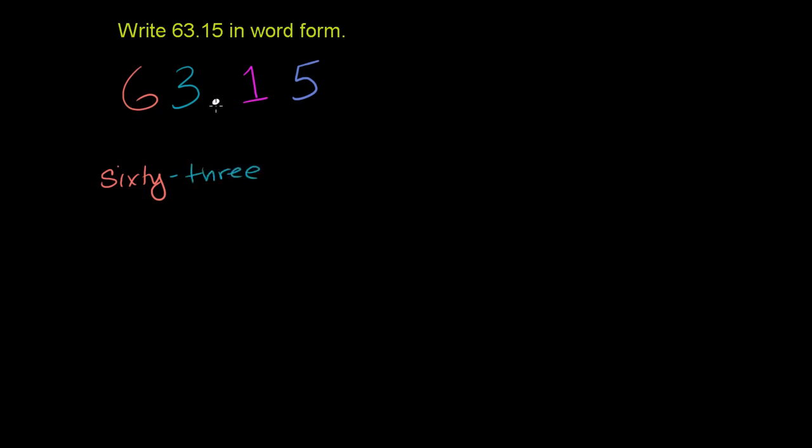And instead of the decimal, we'll write 'and'. Now there's two ways to go here. We could say, and 1 tenth and 5 hundredths, or we could just say, look, this is 15 hundredths.